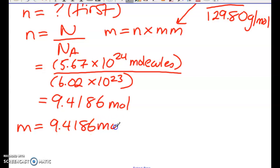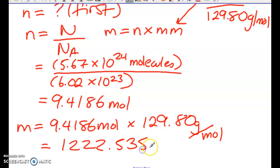So you don't want to round prematurely, because then what's going to happen is you're going to have a totally different answer from the final answer, because you're going to round too much. Okay, so we're doing mass times molar mass. I'm just plugging in the molar mass from before, 129.8. So we get here, the mass is 1222.535 grams.